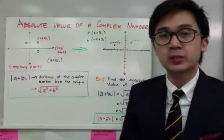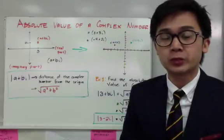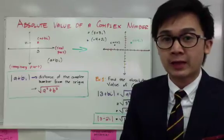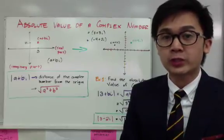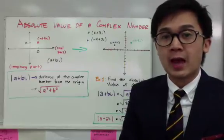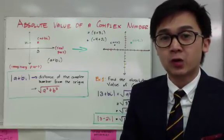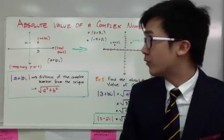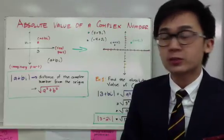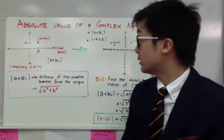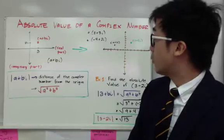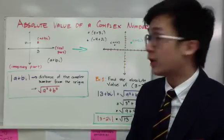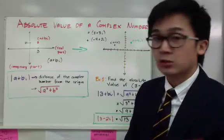We're going to correlate the complex number to trigonometry today. We're going to find its absolute value, and we're going to convert our complex number to its trig form and to its polar coordinate. The first thing we need to know to be able to answer all these questions is to understand how the graph of a complex number looks like in an x-y plane.